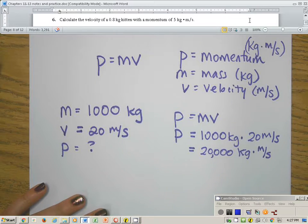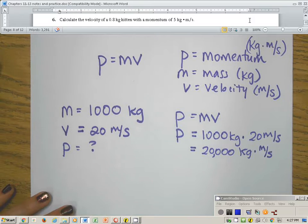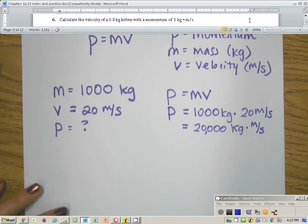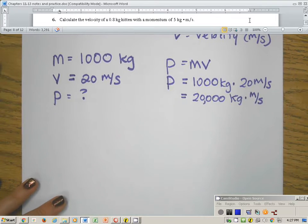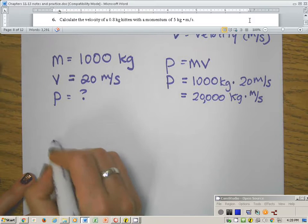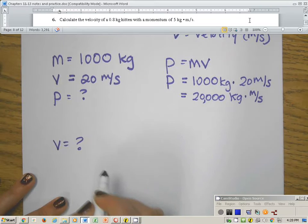The other example that I have has you solving for velocity. So it's the same idea. It says calculate the velocity. So right off the bat, I have the question. So v is a question mark.